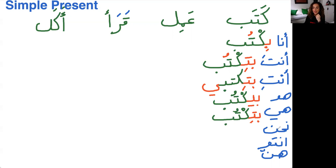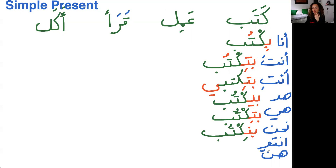Nahna: the prefix is na, so nahna niktub. The ba in the prefix can sometimes sound like a meem — nahna mniktub. You can barely hear the difference between niktub and mniktub, so don't make a fuss out of it. For intu, it's the same prefix bt as inta and inti, but it's the plural, so we add the suffix waw at the end — intu btiktbu.